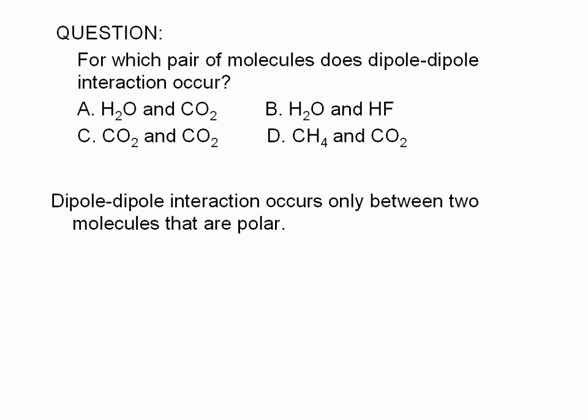Dipole-dipole interactions occur only between two molecules that are polar, so we just need to identify the pair where both molecules are polar. By now you should be able to figure out if a molecule is polar or not. The polar molecules here are H₂O and HF only. Therefore, dipole-dipole interaction only occurs between this pair. The correct answer is choice B.